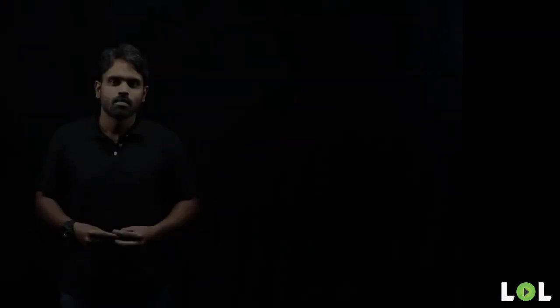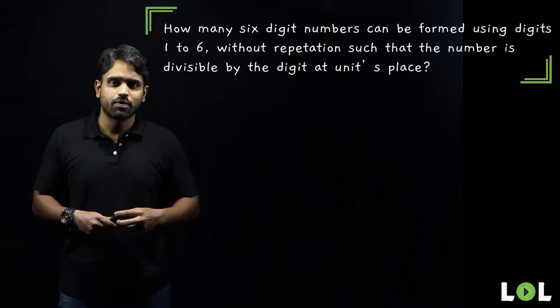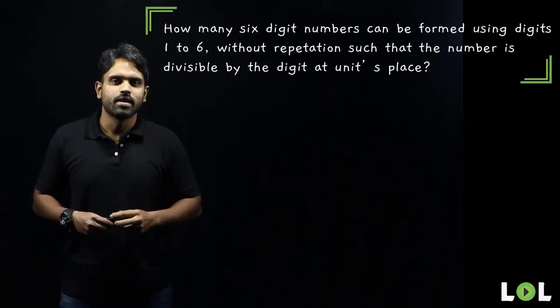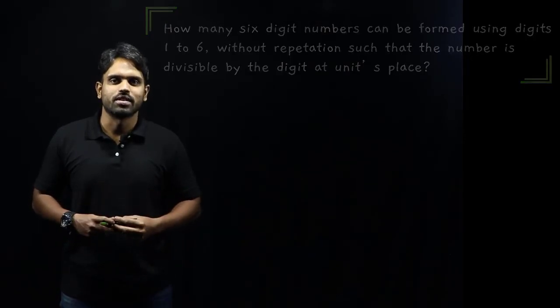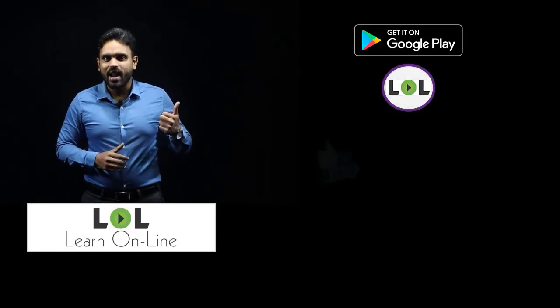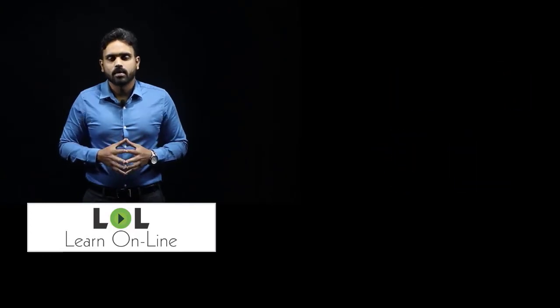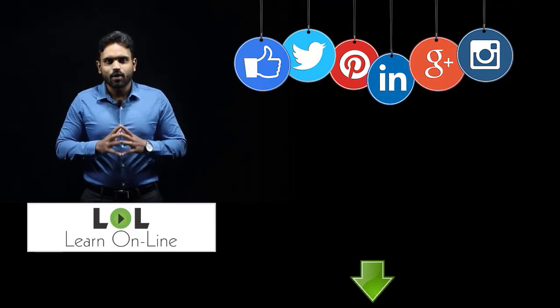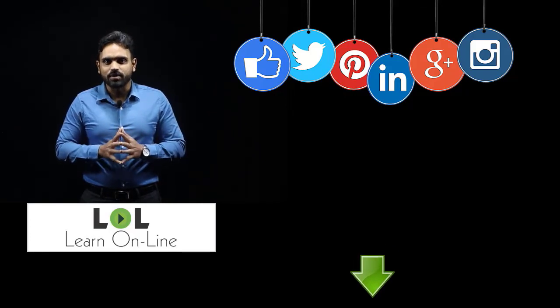The difficulty level of forming-numbers questions can be increased by adding conditions. Here's one that combines divisibility rules with the concept: how many six-digit numbers can be formed using digits 1 to 6 without repetition, such that the digit in the units place can divide the entire number? Give it a try — or look out for our advanced courses. Like, share, subscribe, and drop questions in the comments or reach out via Facebook or Instagram.